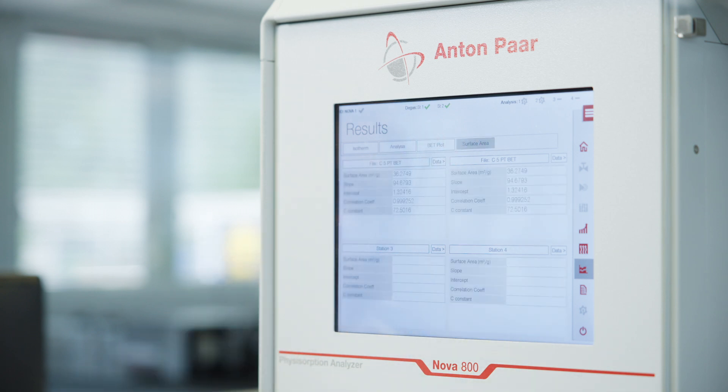Once the analysis is done, the BET surface area is automatically calculated from the multipoint isotherm displayed on the touch screen. So this computed BET surface area, measured in square meters per gram, plays an indirect role on the capacity, as well as on the charge-discharge rates of the battery.